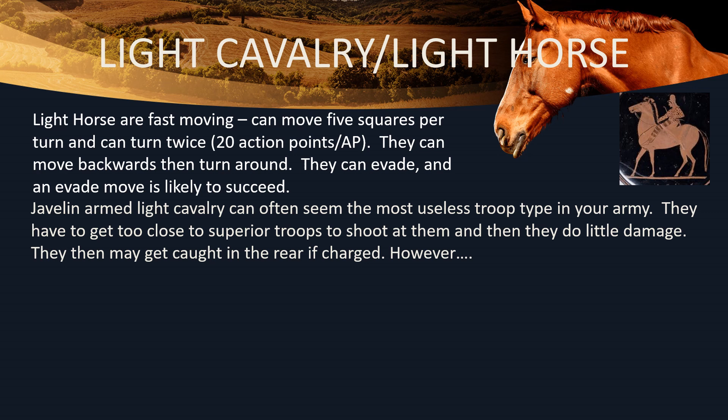In this video I'm basically talking about the characteristics — most of the tactical information will be in the next one. Light horse are fast moving; they can move five squares per turn and can turn twice because they have 20 action points. They can even turn around and shoot. Light horse usually can evade, and because they can move so fast an evade move is likely to succeed. They don't do much damage often, but they can dart in and dart out again — that's their function.